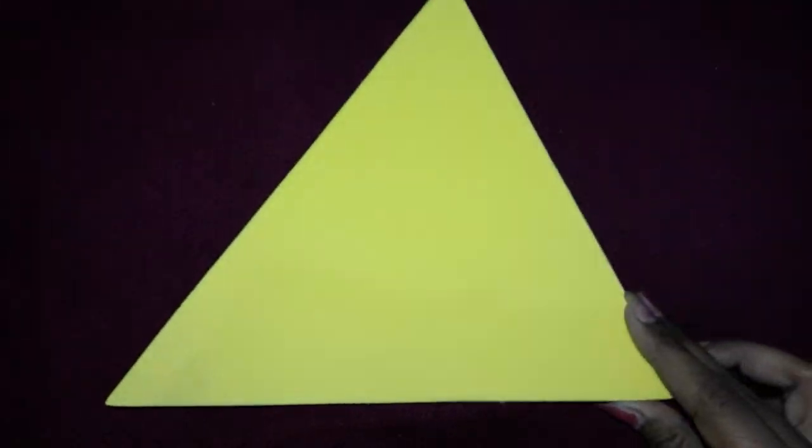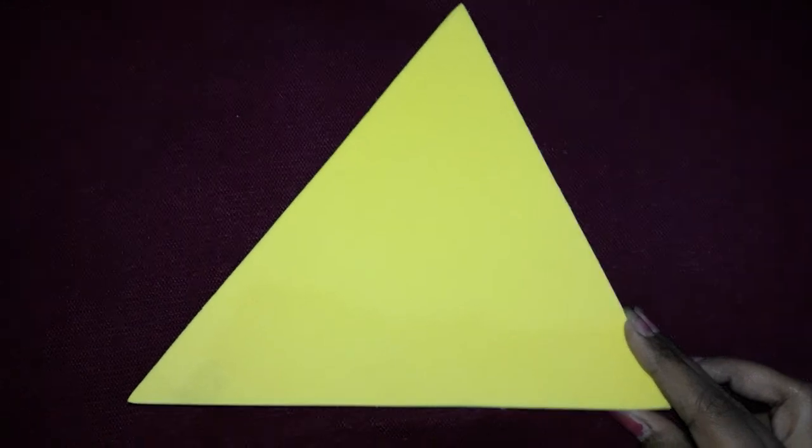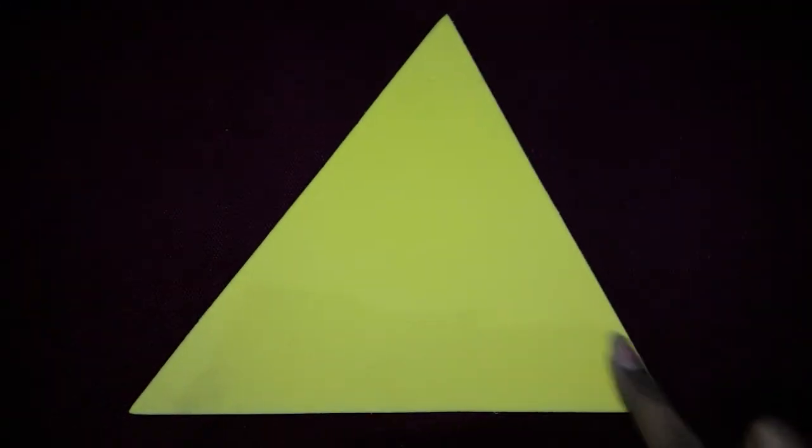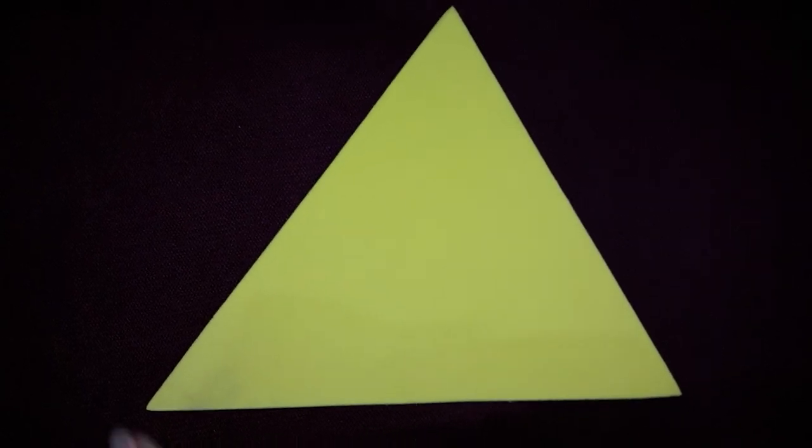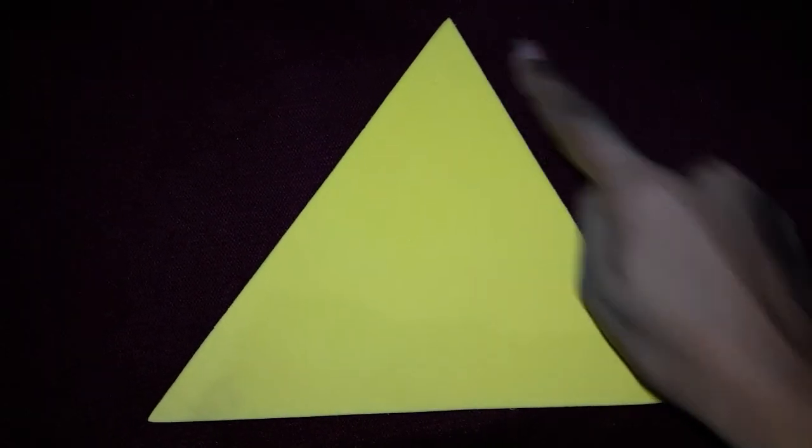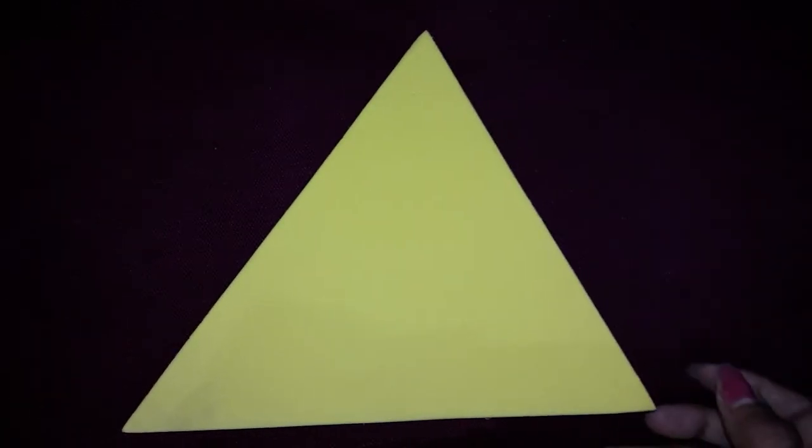Next shape, this is triangle. Yeh kya hai? Triangle. Ab is kya hai? Three sides hai. One, two, three. Three sides and three vertex. Three corner hai na. One, two, three. Three corner hai. Toh kya hoga yeh? Three vertex. Clear.